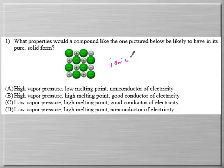An ionic compound as a solid should be a non-conductor and has high melting points, not low melting points.